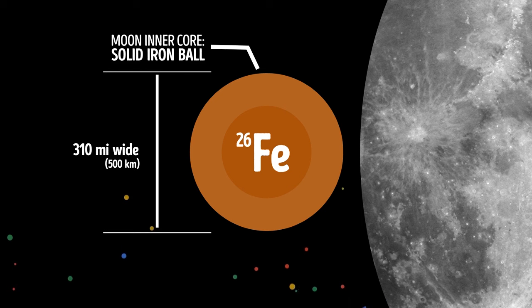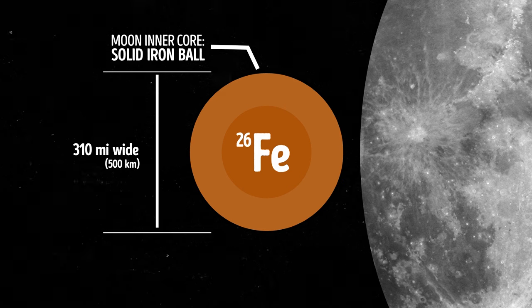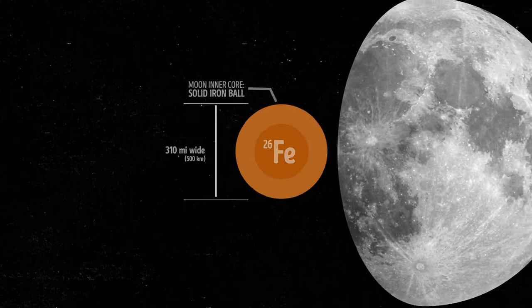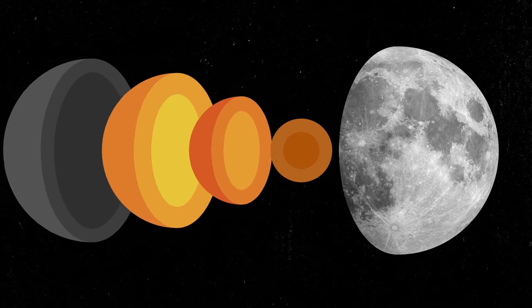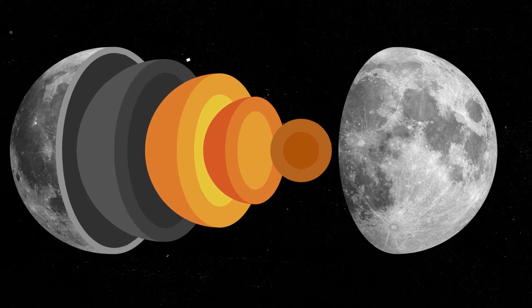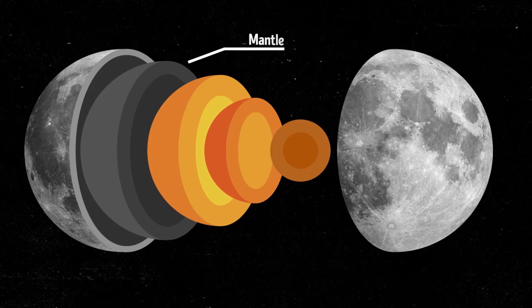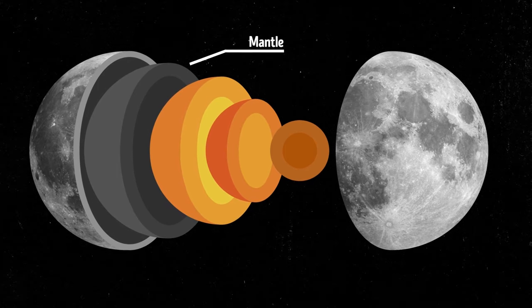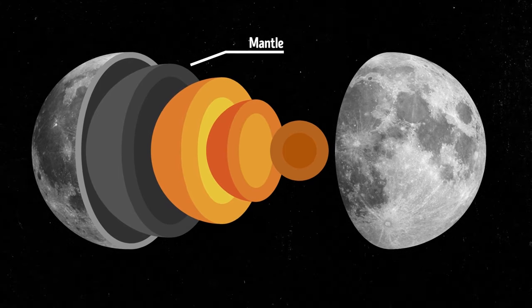It's about 310 miles wide, which is nearly 15 percent the size of the entire moon. Researchers also have stumbled upon evidence that supports the theory that the layer between the moon's surface and its core, called the mantle, has been moving around as the moon evolved over time.